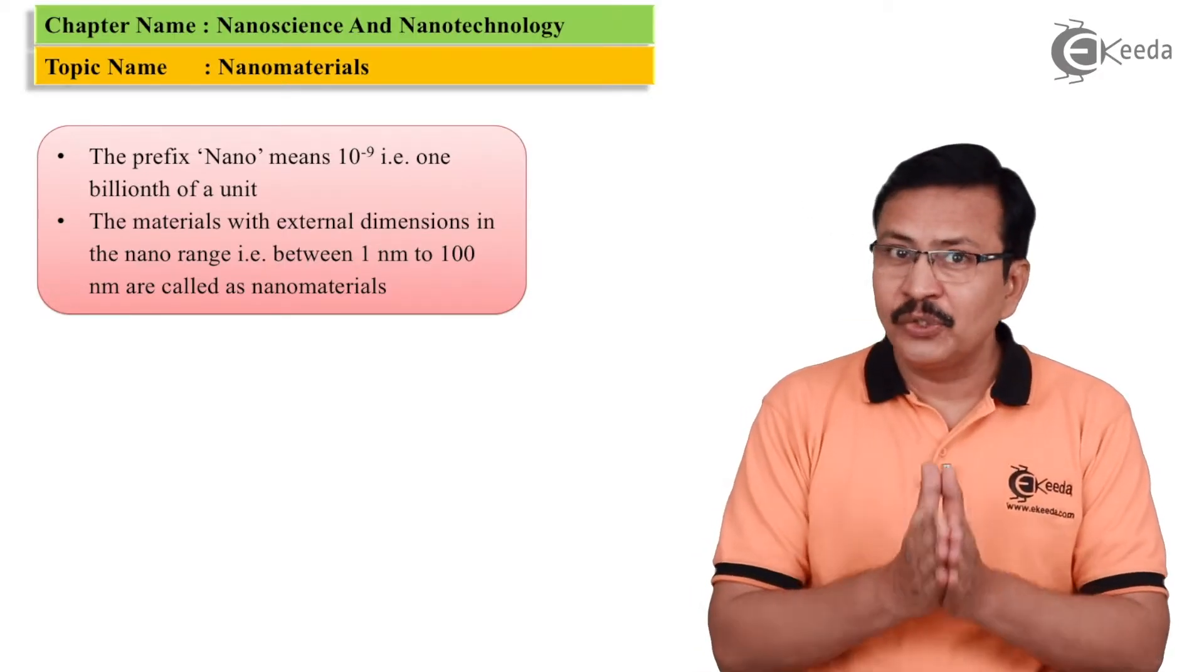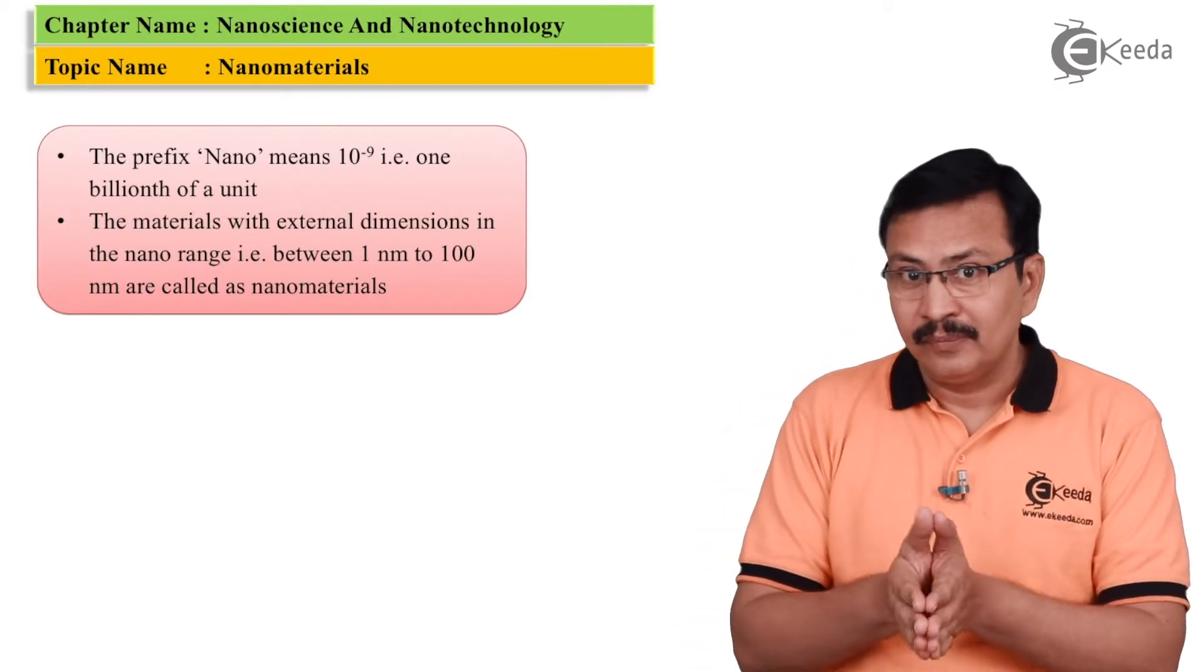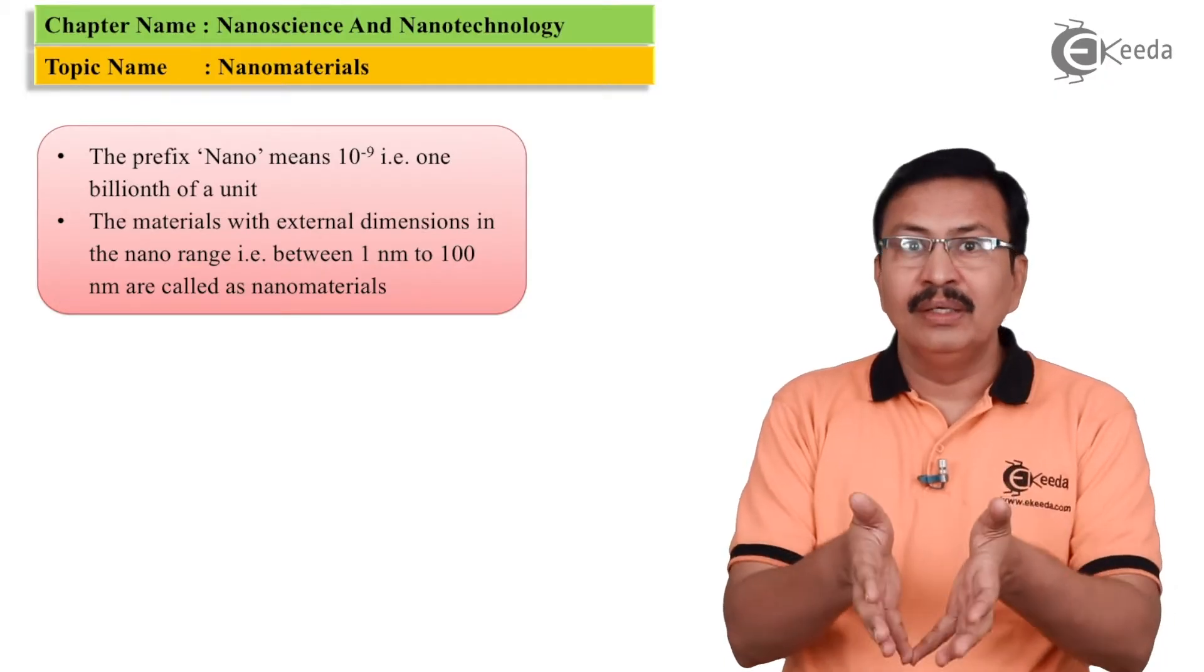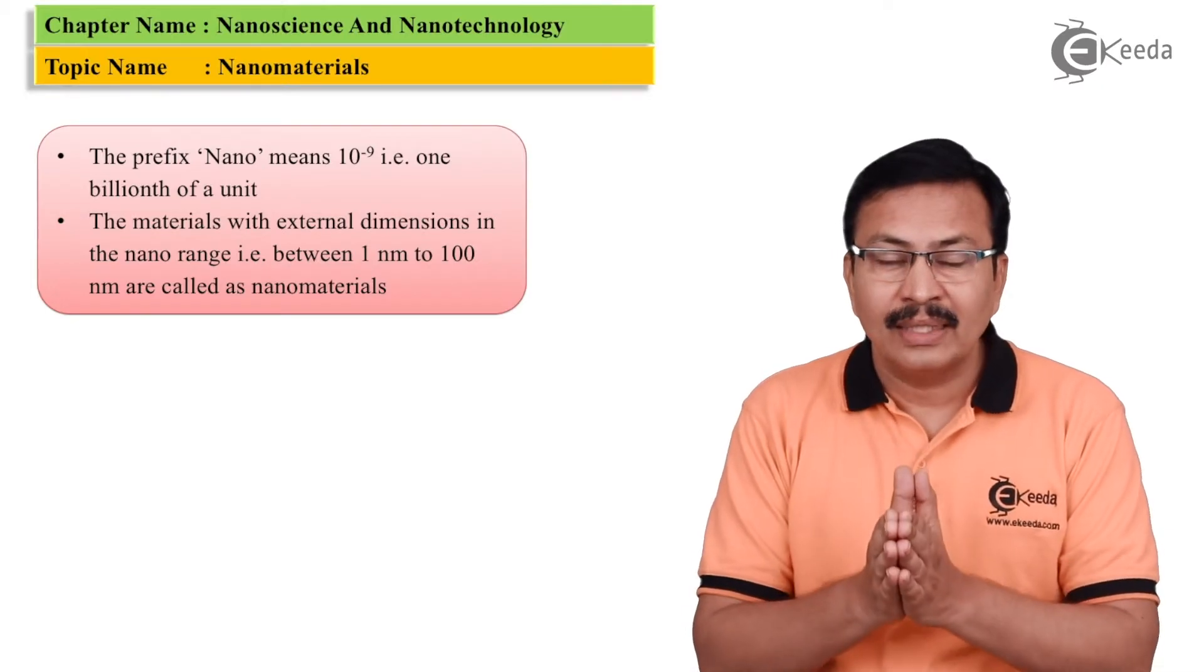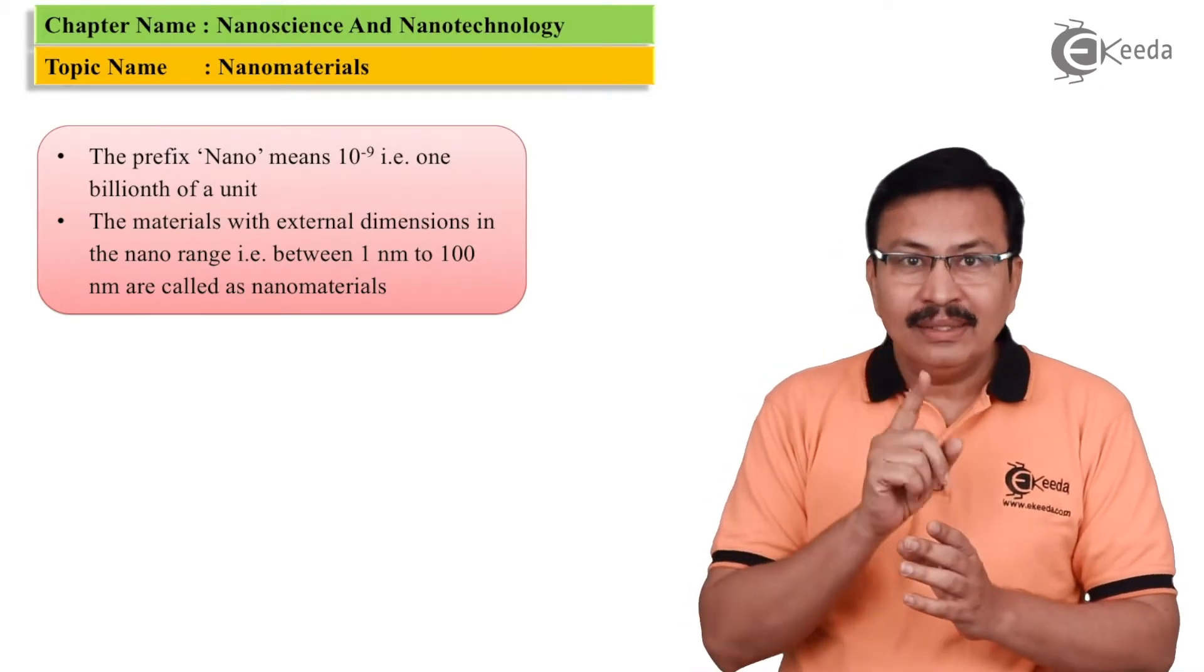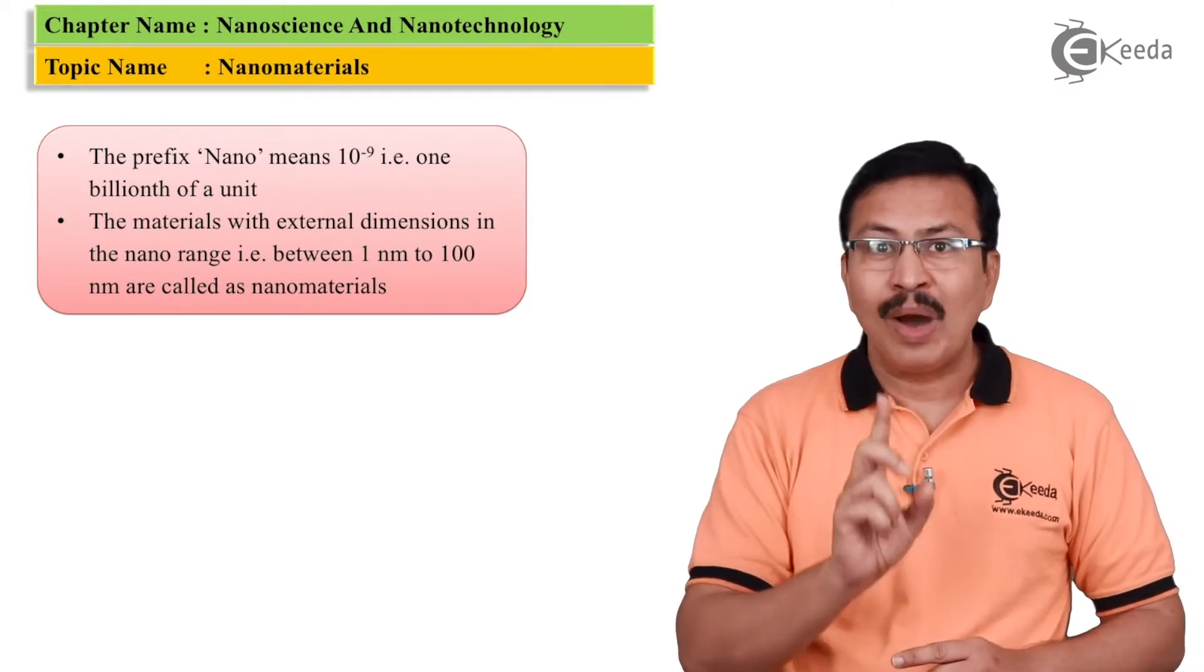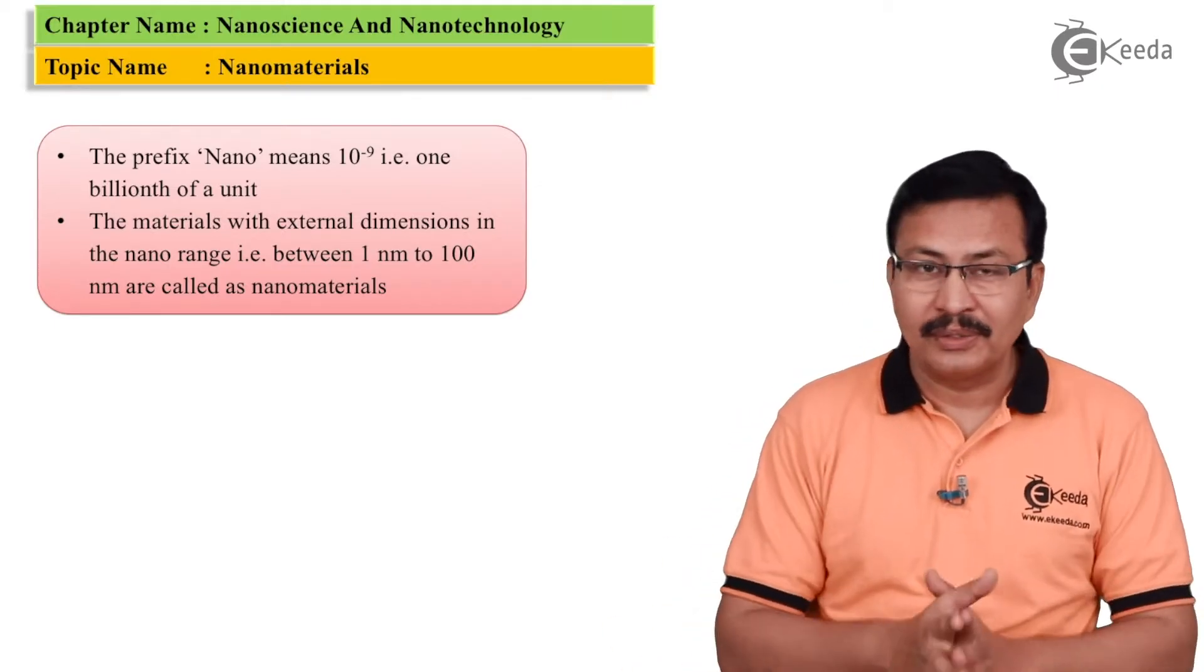Angstrom as you know is 10 raised to minus 10 of a meter and nanometers, that is nm in short, as you have just now learned corresponds to 10 raised to minus 9 meters. So, 10 angstroms corresponds to 1 nanometer. Isn't it a very small unit?